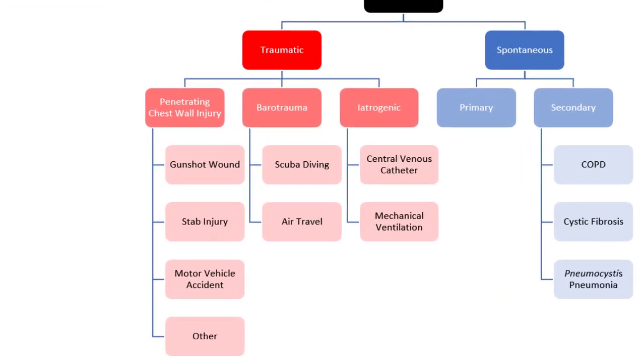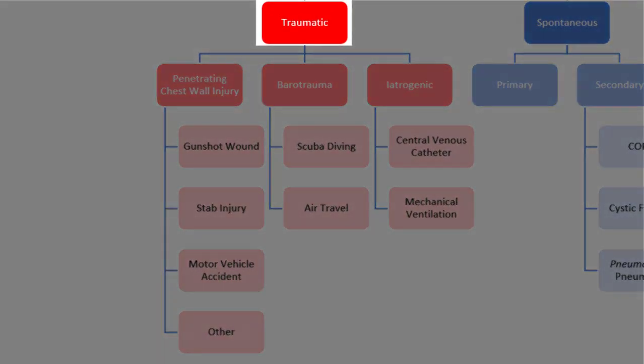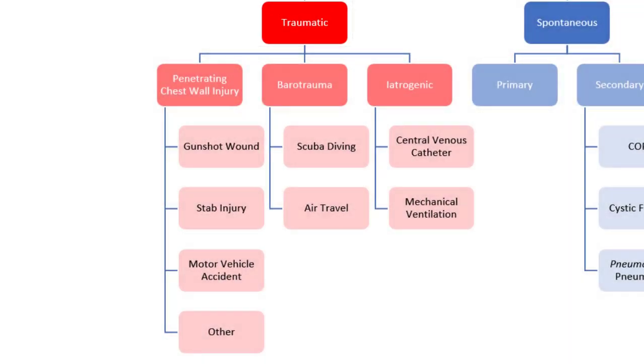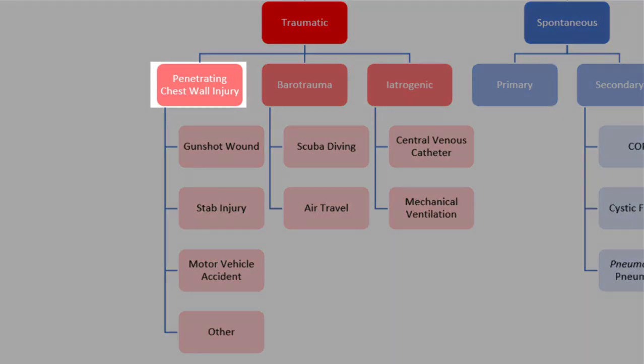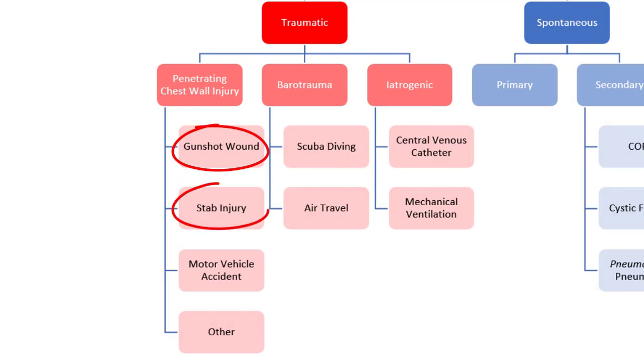There are a number of potential causes of pneumothorax. To categorize them, we'll use the scheme shown here. We'll start by discussing traumatic pneumothorax, since it is easiest to grasp. As implied by the name, this is a pneumothorax that occurs secondary to a traumatic cause. Pneumothorax can result from a penetrating injury to the chest wall, such as a gunshot wound, a stab injury, or injuries sustained from a motor vehicle accident. Pneumothorax can also result from the pressure changes associated with scuba diving or air travel.